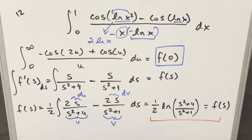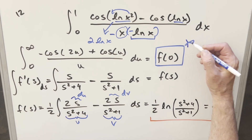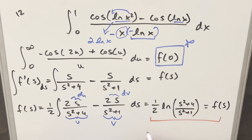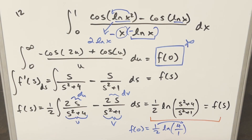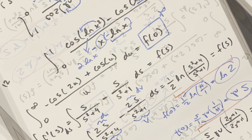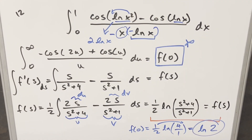Now we just need to find f(0). Plugging in s equals 0: we get 1/2 times natural log of 4 over 1. Taking the 1/2 into the exponent gives us the square root of 4, which is 2. So the final answer is natural log of 2. Thanks everyone for watching — have a good day!